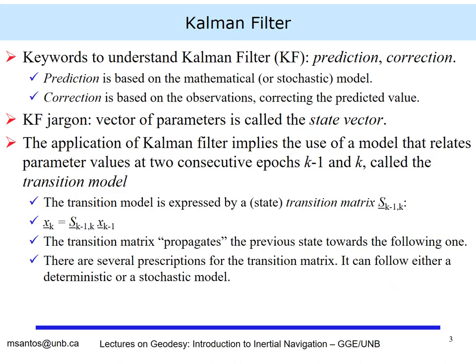Keywords to understand Kalman filter are prediction and correction. Prediction is based on the mathematical model, and correction is based on the observations correcting the predicted value. In the jargon of Kalman filter, the vector of parameters is called the state vector. The application of Kalman filter implies using a model that relates parameter values between two consecutive epochs, called the transition model, expressed by a transition matrix or state matrix.